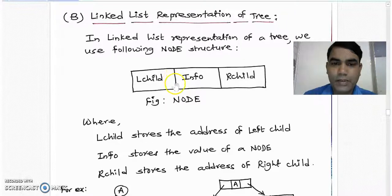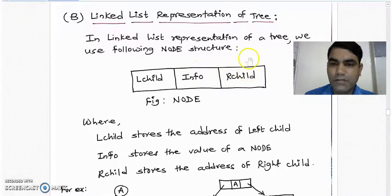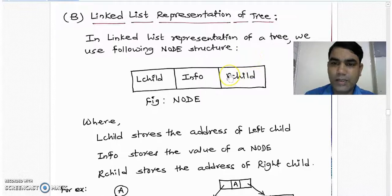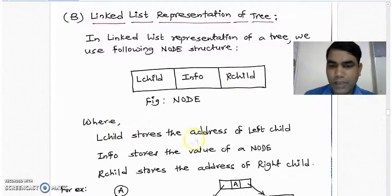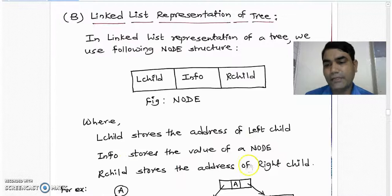The first part is left child pointer to the left child. The middle part is information of the node. The last part consists of the pointer to the right child. Where Lchild stores the address of the left child, information stores the value of a node, and Rchild stores the address of the right child.